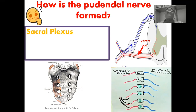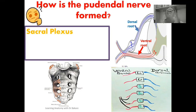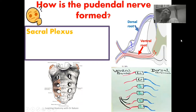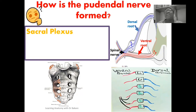Also behind, we have a collection of rootlets highlighted here in blue, and this is referred to as the dorsal root — because it is located behind. This is on one side of the spinal cord, and we also have this configuration on the other side. The two roots, the ventral and the dorsal root, come together at the point highlighted in black to form the spinal nerve.